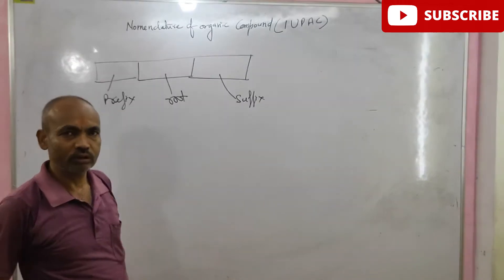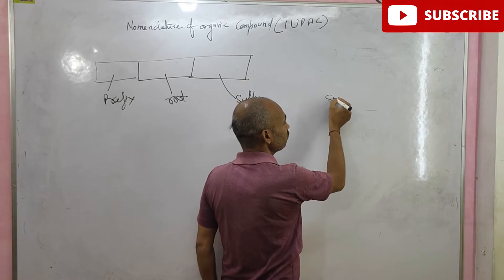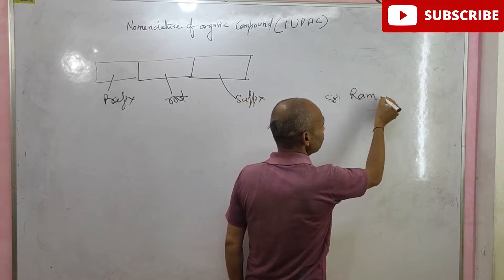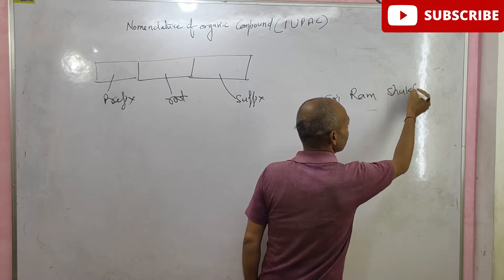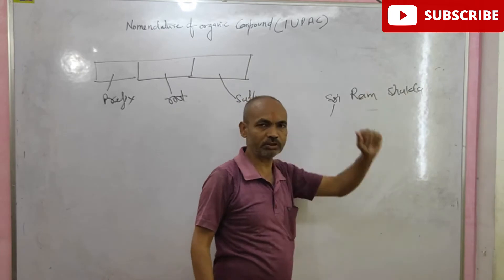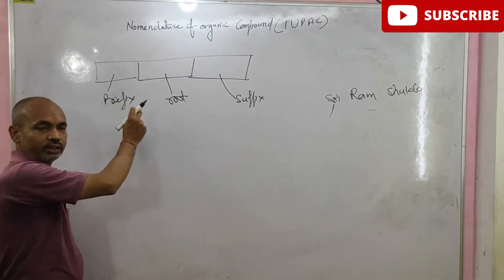Suppose that the name of any person is 3-RAM-SUKTL. This is prefix, this is root, and this is suffix. At same, in organic chemistry, we need three points to name the organic compound.